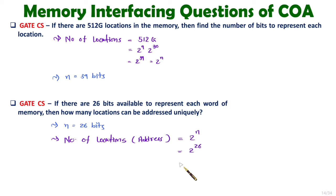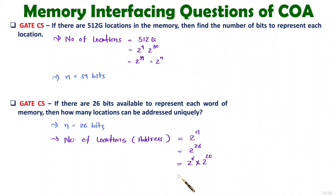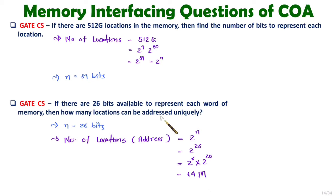It will be given based on kilo, mega, giga. So here, 2 to the power 26 equals 2 to the power 6 into 2 to the power 20. 2 to the power 6 is 64, and 2 to the power 20 is mega. So how many locations are there? 64 mega number of addresses, which can locate data uniquely.